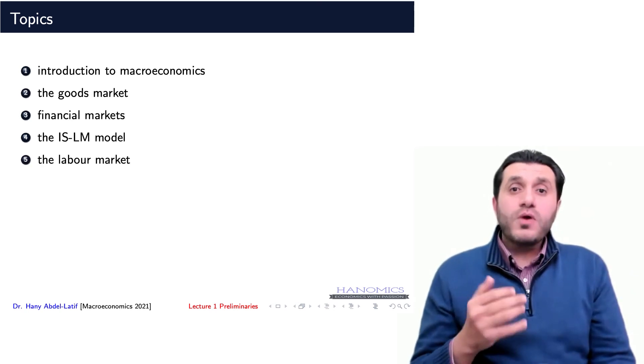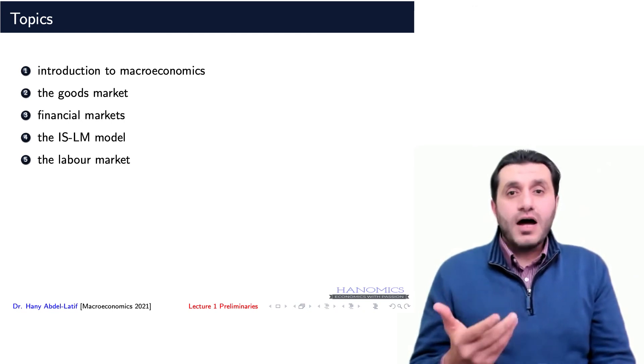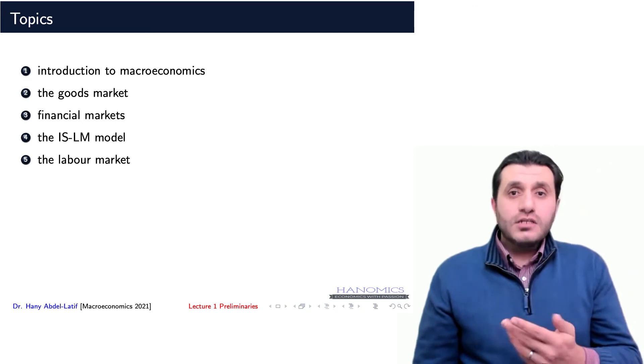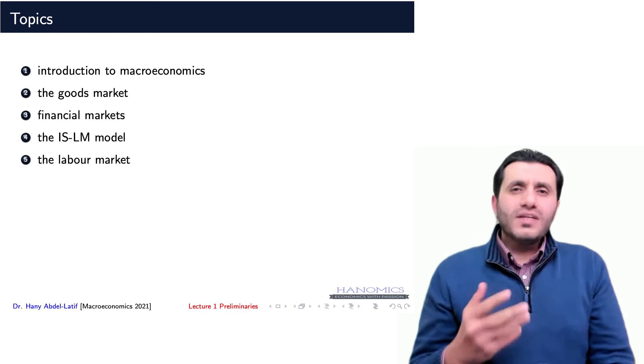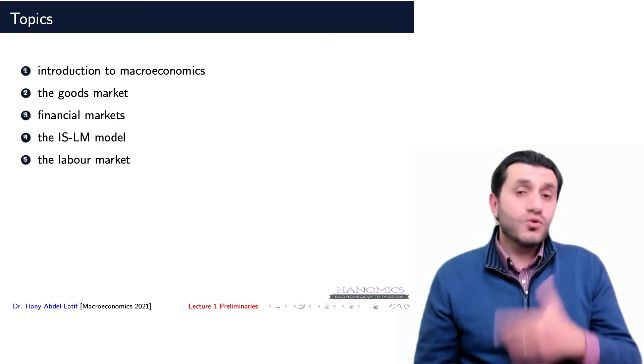In the fifth topic, we will turn to the medium run by studying the labor market. This topic relates to the interaction between demand and supply for labor, what determines the wage level and the unemployment rate.